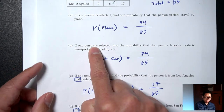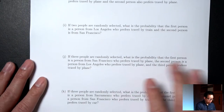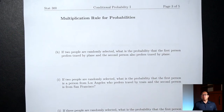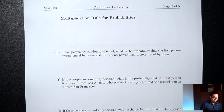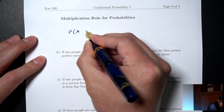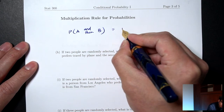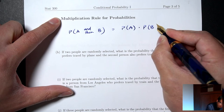Everything we've talked about so far has said 'if one person is selected.' Now we're asking what if two or three people are selected. We can think of selecting more than one person in steps: selecting three people is the same as selecting one person, then a second, then a third. For this we need the multiplication rule, which says P(A then B) = P(A) times P(B | A already occurred).